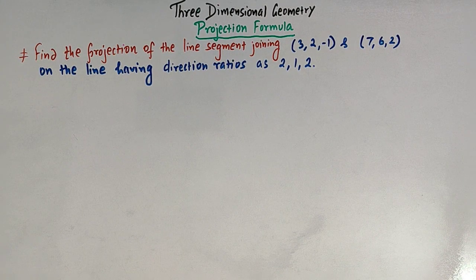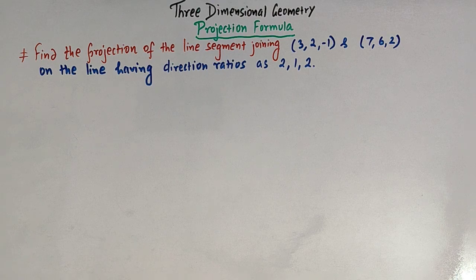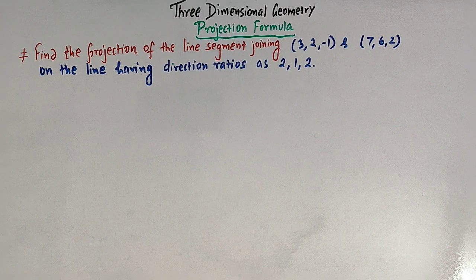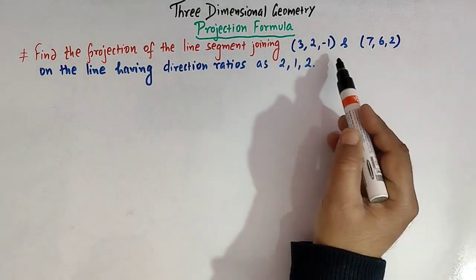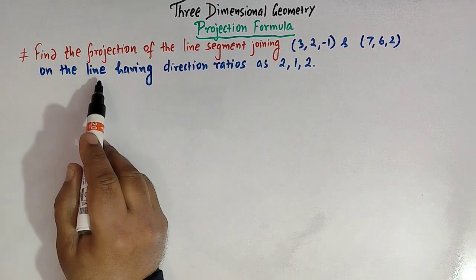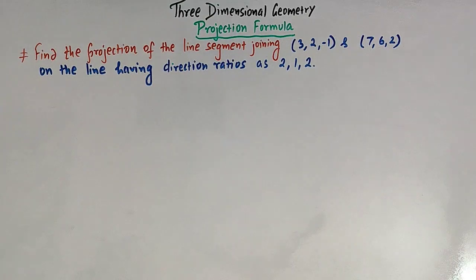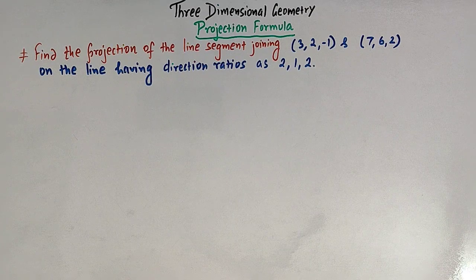Hello viewers. In today's class we are going to discuss one important topic and concept from three-dimensional geometry. Here we'll learn how to find the projection of a line segment on some given line. We'll see the projection formula and solve a problem in which we have to find the projection of a line segment joining two points on a given line having direction ratios 2, 1, 2. So before solving this problem, let us first see what is the projection formula.